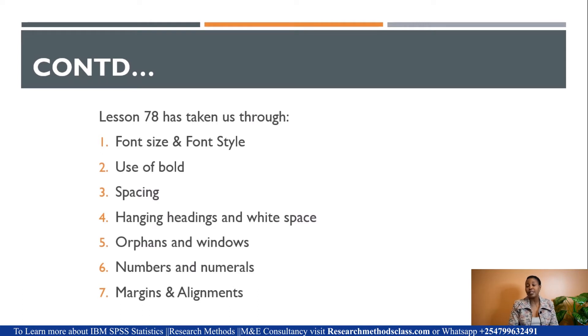We talked about font size and font style. The minimum is 10, the maximum is 14, and APA 7th edition allows us to use various styles discussed in Lesson 74. We talked about using bold only for headings, level 1 to level 5. The spacing across the whole document should be double spaced. Avoid hanging headings or titles in white space, avoid orphans and widows. Use numbers when describing numbers less than 10, but numerals when describing above 10. Margins should be set to 1 inch and left aligned. Do not justify the right margin.